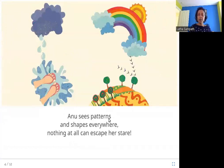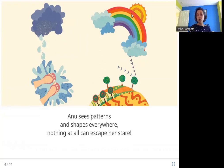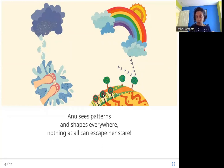Anu sees patterns and shapes everywhere. Nothing at all can escape her stare. Everywhere Anu looks, she sees patterns and shapes — like this rainbow that has seven colors in stripes and is shaped like an arch. Then there are the shapes of clouds and these swirls. These are all things that Anu sees.